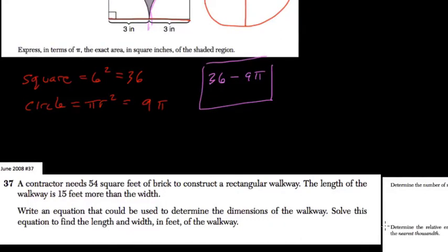Alright, so this one has a bunch of parts, but we'll walk through all of them. A contractor needs 54 square feet of brick to construct a rectangular walkway. In other words, that's the area. That's how much brick is needed. The area equals 54.